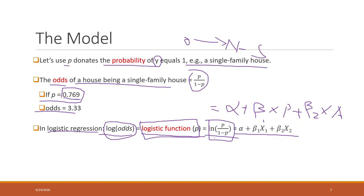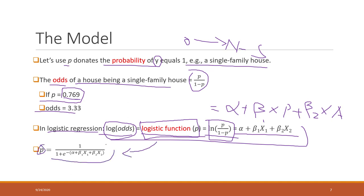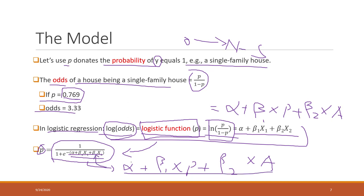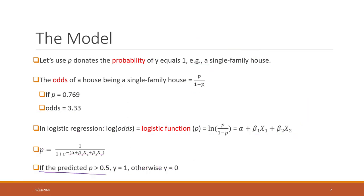From that formula, we can derive the equation to calculate P directly. P equals the logistic function applied to (alpha plus beta1 times house price plus beta2 times house age). Finally, if P is greater than 0.5, we predict y equals 1, meaning it is a single-family home; if P is less than 0.5, it will be classified as a non-single-family home.